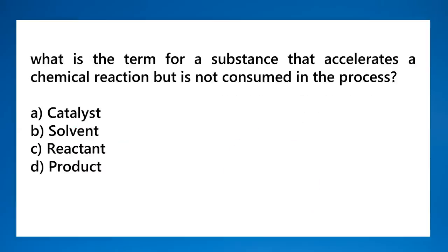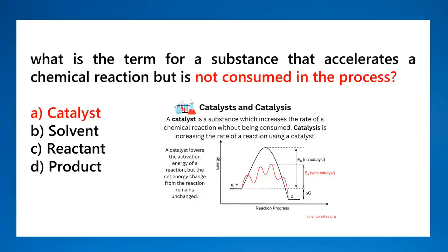What is the term for a substance that accelerates a chemical reaction but is not consumed in the process? That is a catalyst. A catalyst increases the rate of chemical reaction without being consumed — it speeds up the reaction by lowering the activation energy. Enzymes are biological catalysts. The catalyst is not changed or depleted in the process.